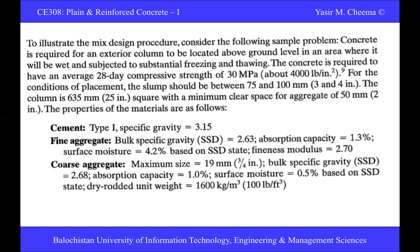Some material specifications are provided. Cement specific gravity is 2.15. Fine aggregate saturated surface dry specific gravity is 2.63, its absorption capacity is 1.3%, and surface moisture is 4.2%. The fineness modulus of fine aggregate is 2.70 — I'll tell you where this is used later.